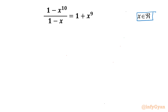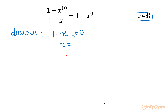Let's get started by writing the domain of the equation. The denominator cannot be zero, so we write 1 - x ≠ 0. The conclusion is x cannot be equal to 1. So x = 1 is an exempted solution if it appears.